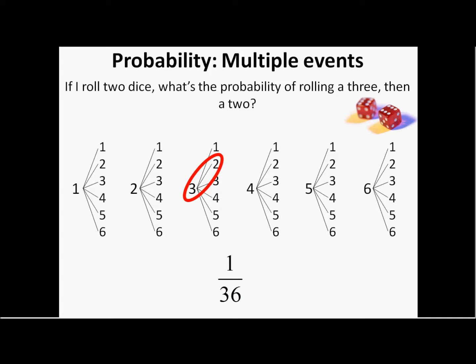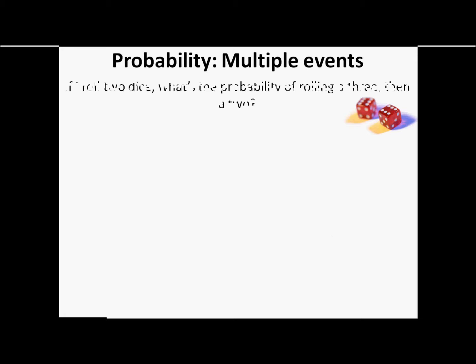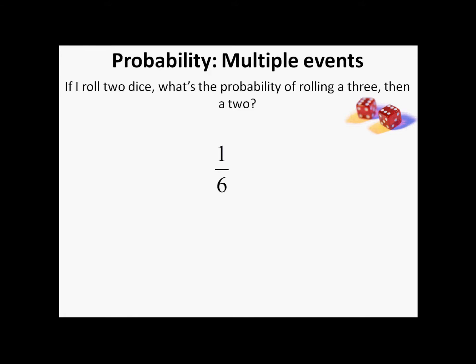Now, once again, there is an easier way of doing this. You just find the probability. Okay, probability of rolling a three, then a two. Well, probability of rolling a three on one dice is one out of six. Probability of rolling a two on the other dice is one sixth. You just multiply them together, one out of 36.